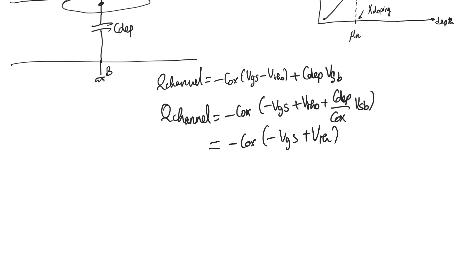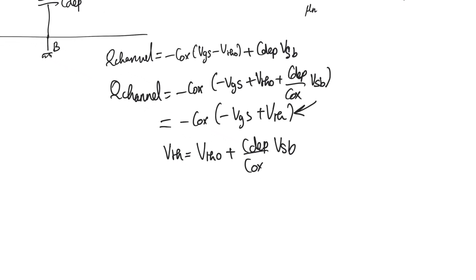If you don't know why this is true, this is by definition of the Q in the channel and by definition of the threshold voltage. Any mobile charge in the channel is going to be C-oxide into Vgs minus V-threshold. So the threshold voltage is deviated from its V-threshold naught value, where V-threshold naught is the normal expression of V-threshold we know, by this amount.